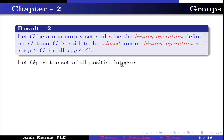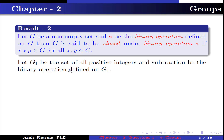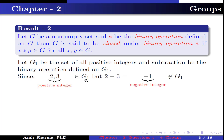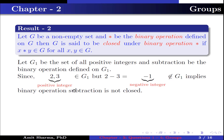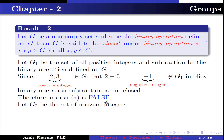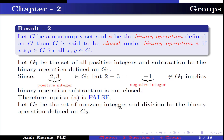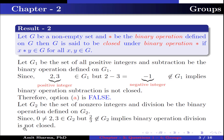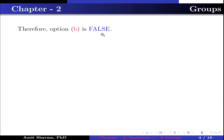Let G1 be the set of all positive integers and subtraction be the binary operation defined on G1. Since 2 and 3 are positive integers belonging to G1, but 2 minus 3 equals minus 1, which is a negative integer and does not belong to G1. Therefore option A is false. Let G2 be the set of non-zero integers and division be the binary operation defined on G2. Since 2/3 does not belong to G2 because 2/3 is not an integer, binary operation division is not closed. Therefore option B is false.